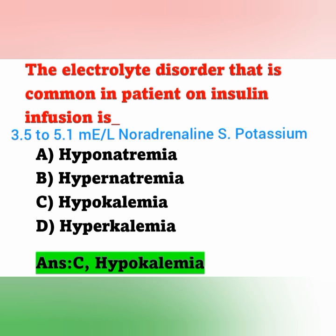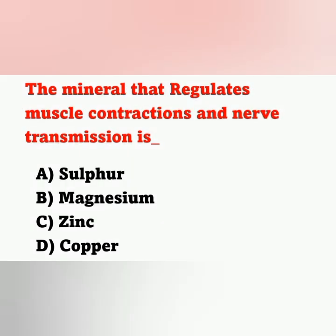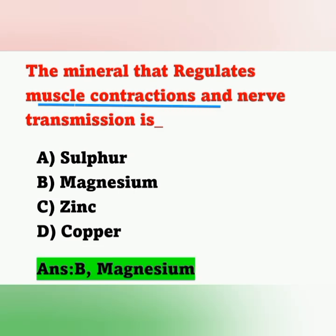Question 13: The mineral that regulates muscle contractions and nerve transmission is — A) sulfur, B) magnesium, C) zinc, D) copper. The correct answer is option B — magnesium. Magnesium is an important intracellular component after potassium. It regulates muscle contractions, nerve transmission, protein synthesis, and DNA repair.